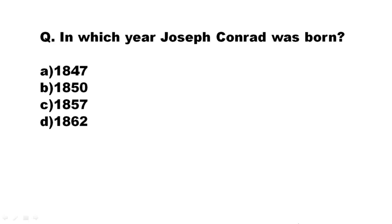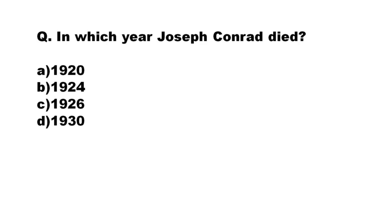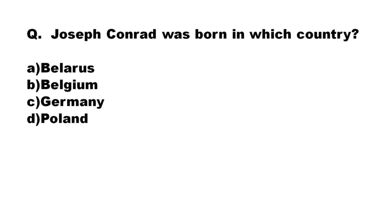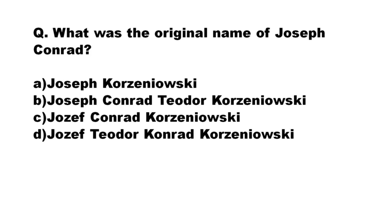Our first question is: in which year was Joseph Conrad born? The options are: A) 1847, B) 1850, C) 1857, D) 1862. The correct answer is option C: 1857. Our next question is: in which year did Joseph Conrad die? The options are 1920, 1924, 1926, 1930. The correct answer is option B: 1924. Our next question: Joseph Conrad was born in which country? The options are Belarus, Belgium, Germany, Poland. The correct answer is option D: Poland.